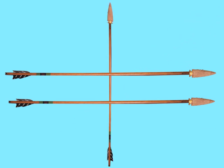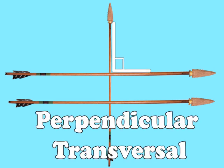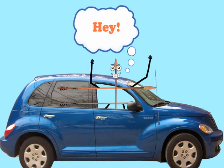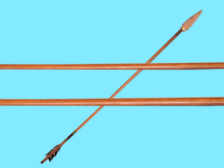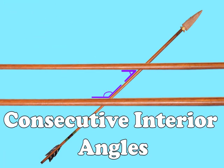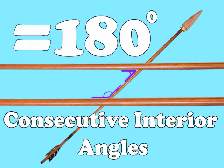When a transversal intersects with parallel lines at right angles, it is called a perpendicular transversal, or PT, to its buddies. With any other sort of transversal, the pairs of angles across from each other, known as consecutive interior angles, will be equal to 180 degrees.